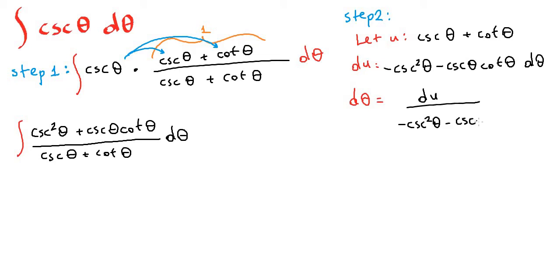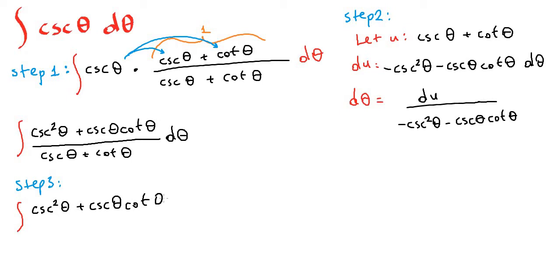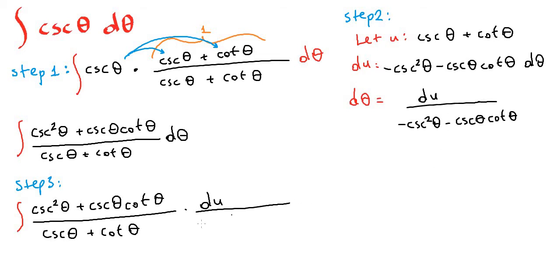As our step 3, we're going to write everything in terms of u. We have cosecant squared theta plus cosecant theta cotangent theta on top, and cosecant theta plus cotangent theta in the denominator. Instead of d theta we substitute du over negative cosecant squared theta plus cosecant theta cotangent theta. This numerator cancels with this denominator because they are exactly the same terms.